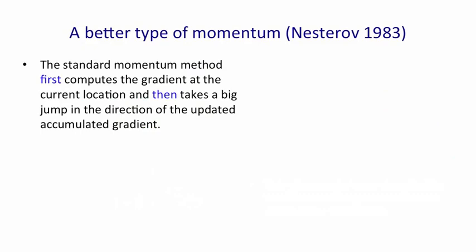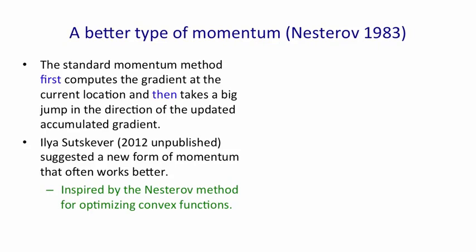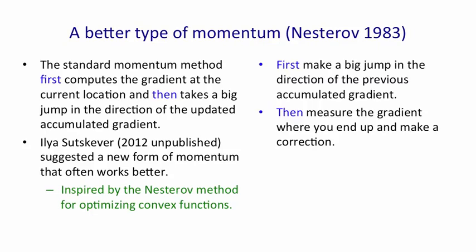Very recently, Ilya Sutskever has discovered that there's a better type of momentum. The standard momentum method works by first computing the gradient at the current location. It combines that with its stored memory of previous gradients, which is in the velocity of the ball, and then it takes a big jump in the direction of the current gradient combined with previous gradients. So that's its accumulated gradient direction. Ilya Sutskever has found that it works better in many cases to use a form of momentum suggested by Nesterov, who was trying to optimize convex functions, where we first make a big jump in the direction of the previous accumulated gradient, and then we measure the gradient where we end up and make a correction. It's very similar, and you need a picture to really understand the difference.